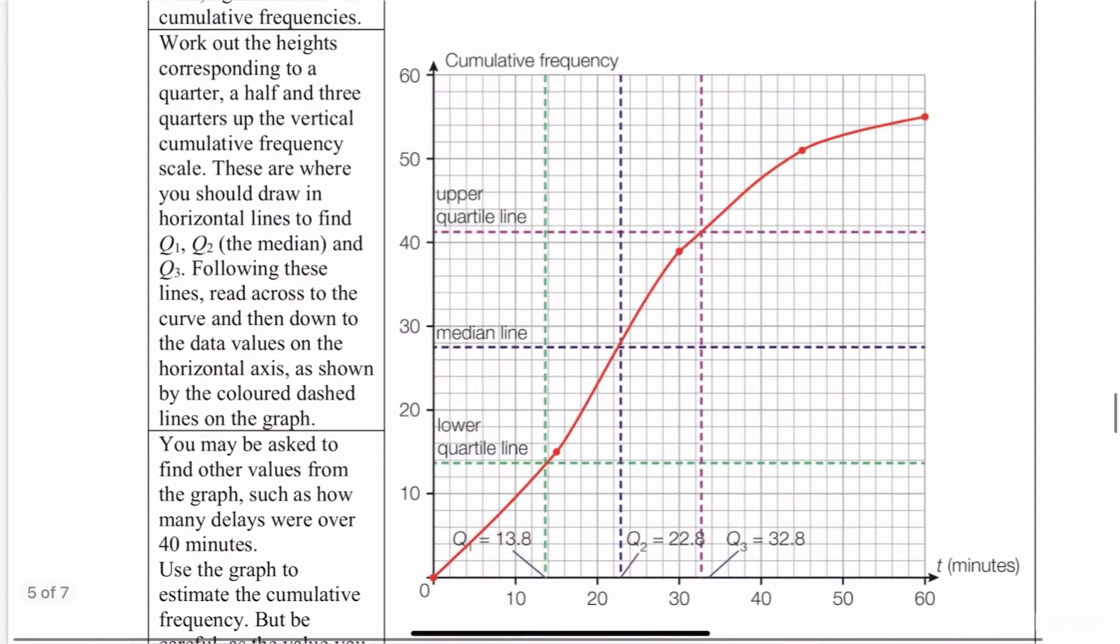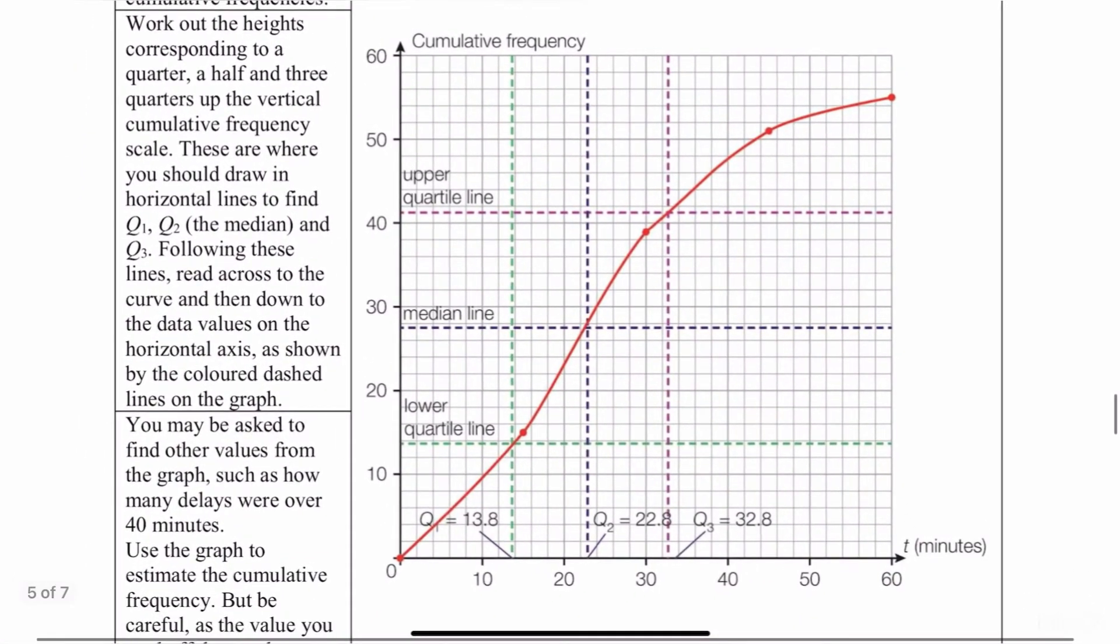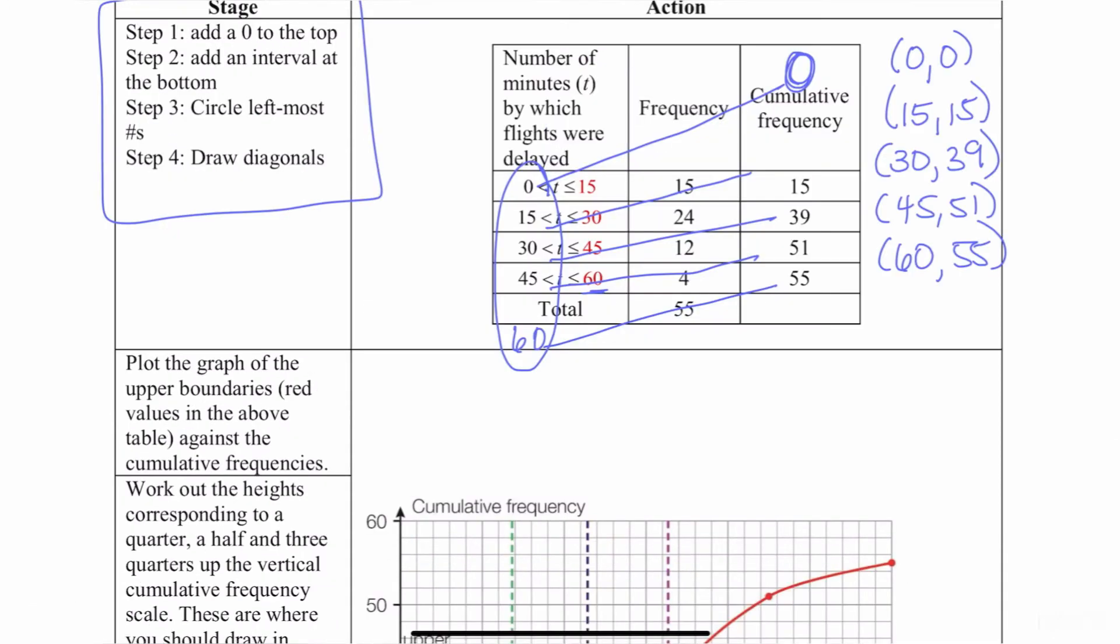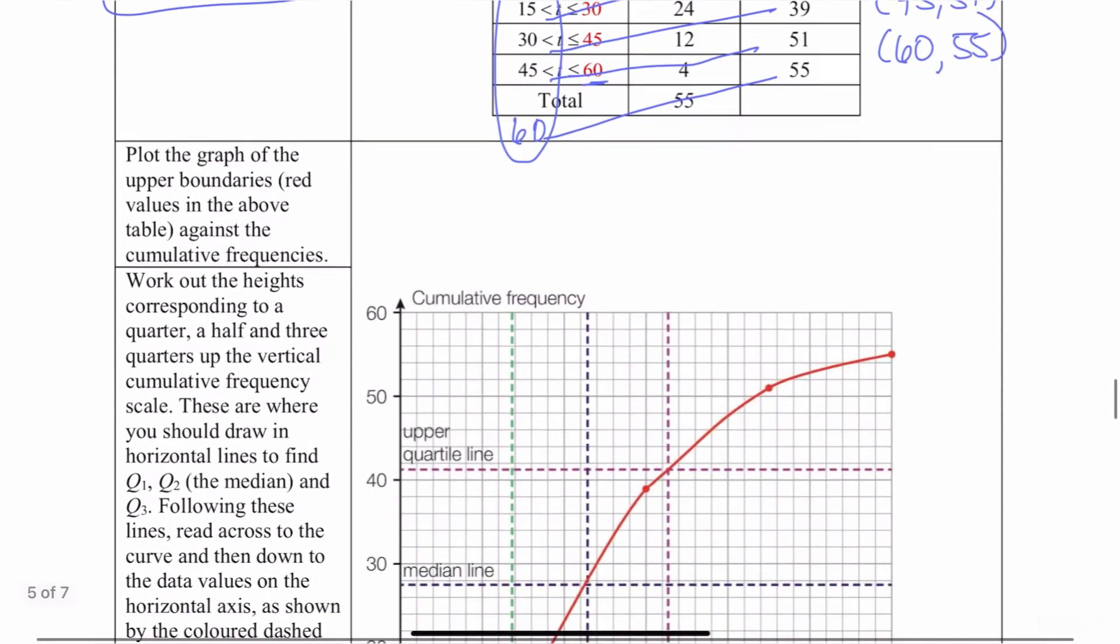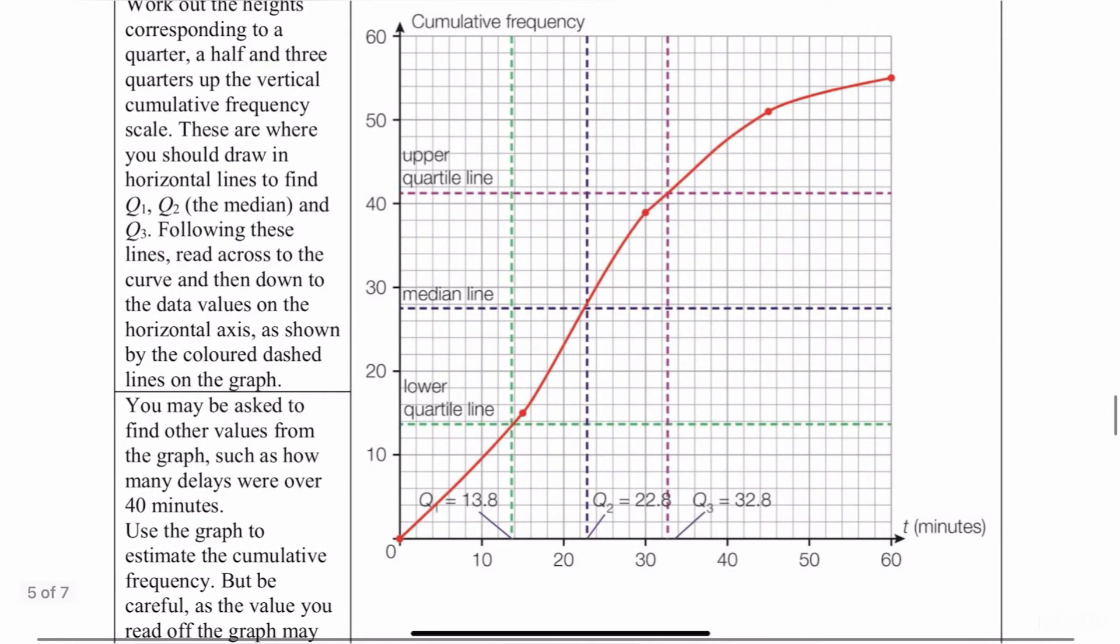So here at the bottom, you're going to notice it's already been done for us, because I'm just showing you how to do this. The first point we said was going to be 0, 0. So sure enough, look at the first point on the graph. It's a point 0, 0.